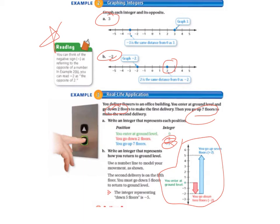Letter B says, write an integer that represents how you return to ground level. Use a number line to model your movement as shown. So, the second delivery is on the 5th floor because we went up 7 floors. We didn't go up to the 7th floor. We went up 7 floors. The second delivery is on the 5th floor. And we must go down 5 floors to return to ground level. So, if we want to go to ground level, we have to go to 0. So, that's going down 5 floors. So, the integer representing down 5 floors is negative 5.